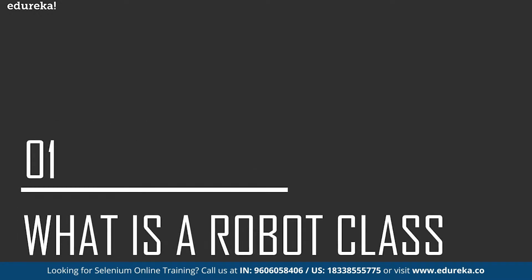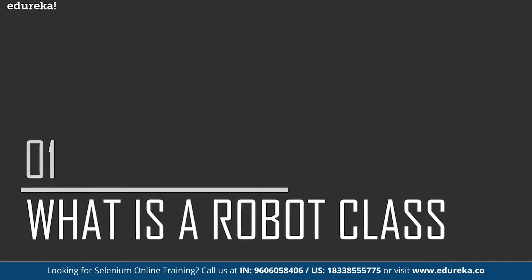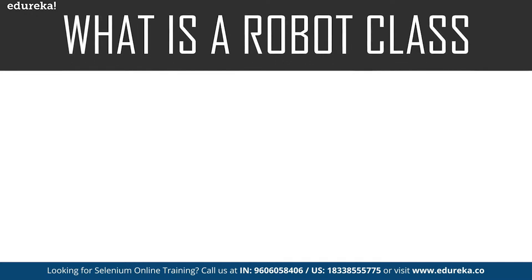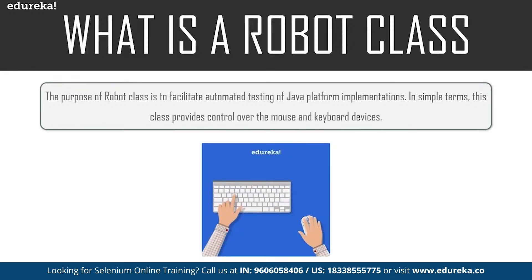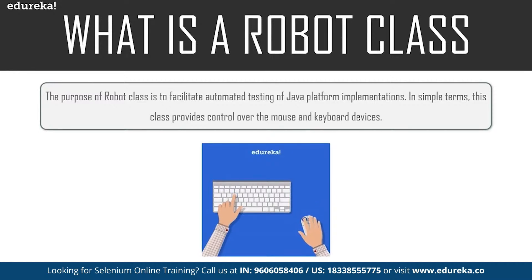Time plays a major role while testing, and we need to make sure that we complete the desired task within a specific time. A Robot class is used to generate native system input events for the purpose of test automation, self-running demos, and other applications where control of the mouse and keyboard is needed. The primary purpose of this Robot class is to facilitate automation testing for the Java platform. In simple terms, this class provides control over the mouse and keyboard devices.